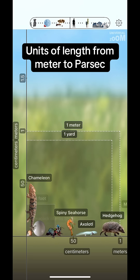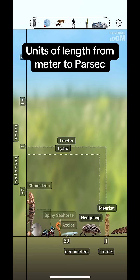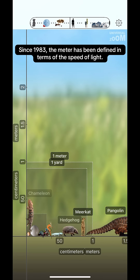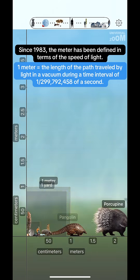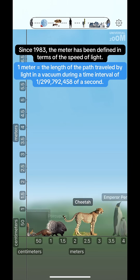Units of length from meter to parsec. Since 1983, the meter has been defined in terms of the speed of light.